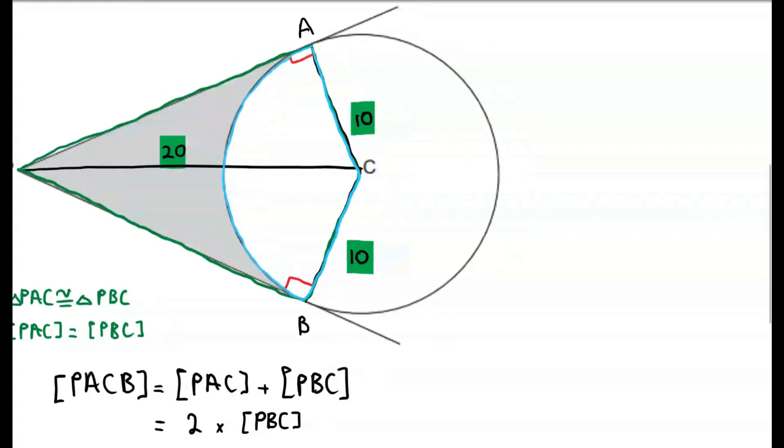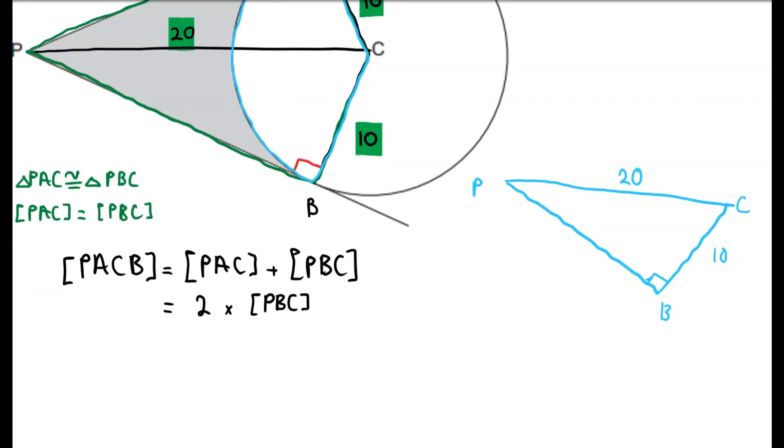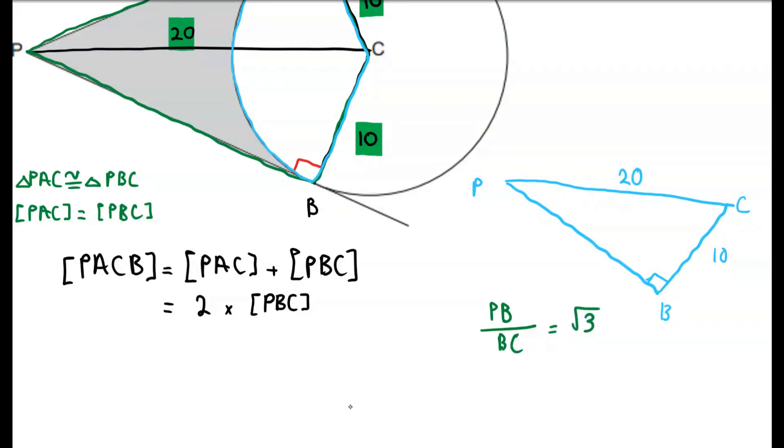So in order to find the area of this triangle, I'm going to draw it to the side. What we notice in this triangle is that the length of the leg BC is a half of the length of the hypotenuse PC. So this means that it must be a 30-60-90 triangle because in a 30-60-90 triangle, the ratio of the sides are 1 to 3 to root 2. So this means that the length of side PB divided by the length of side BC is root 3. Or in other words, PB is equal to BC times root 3, which is 10 root 3.